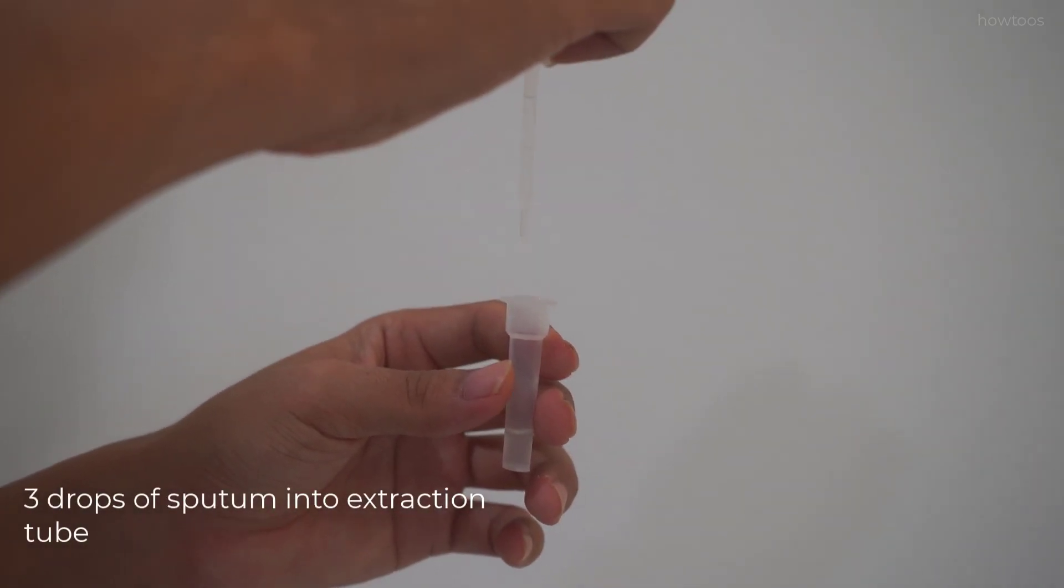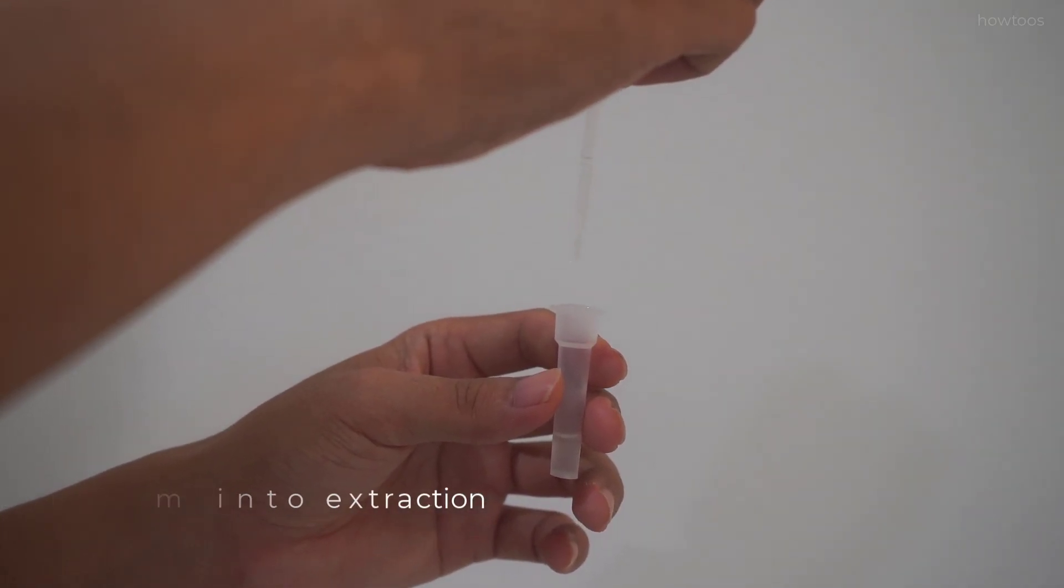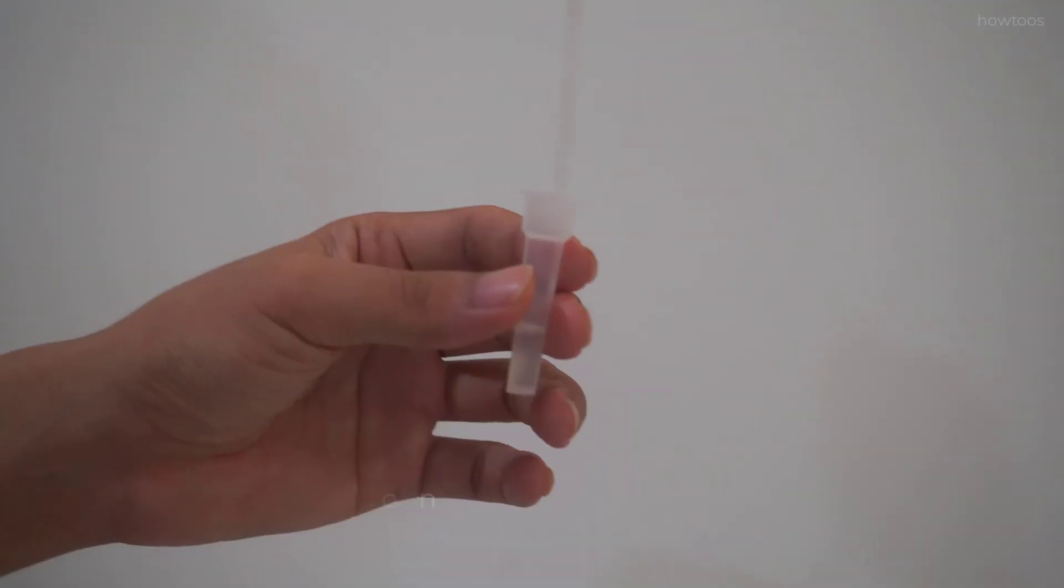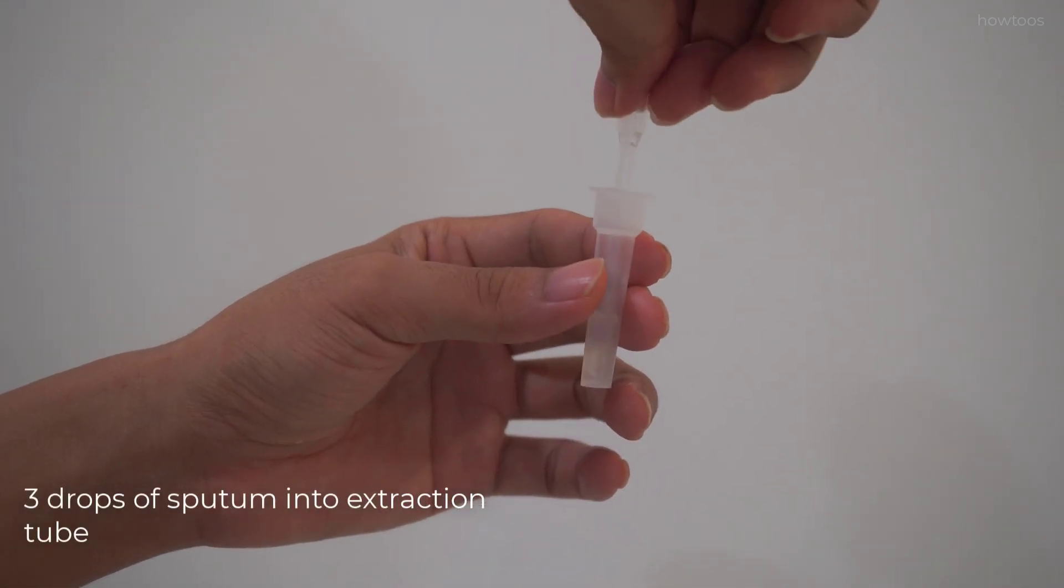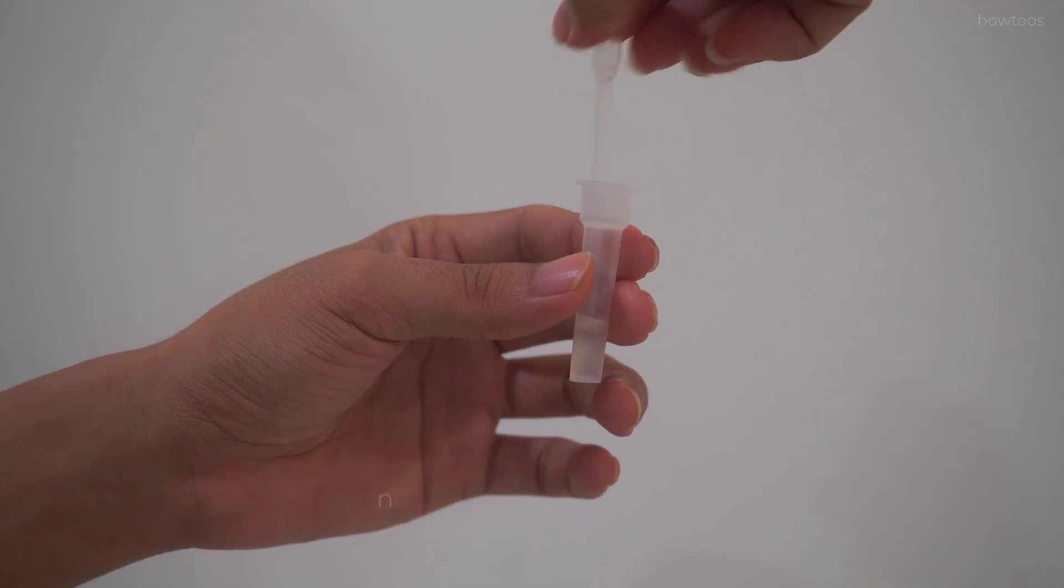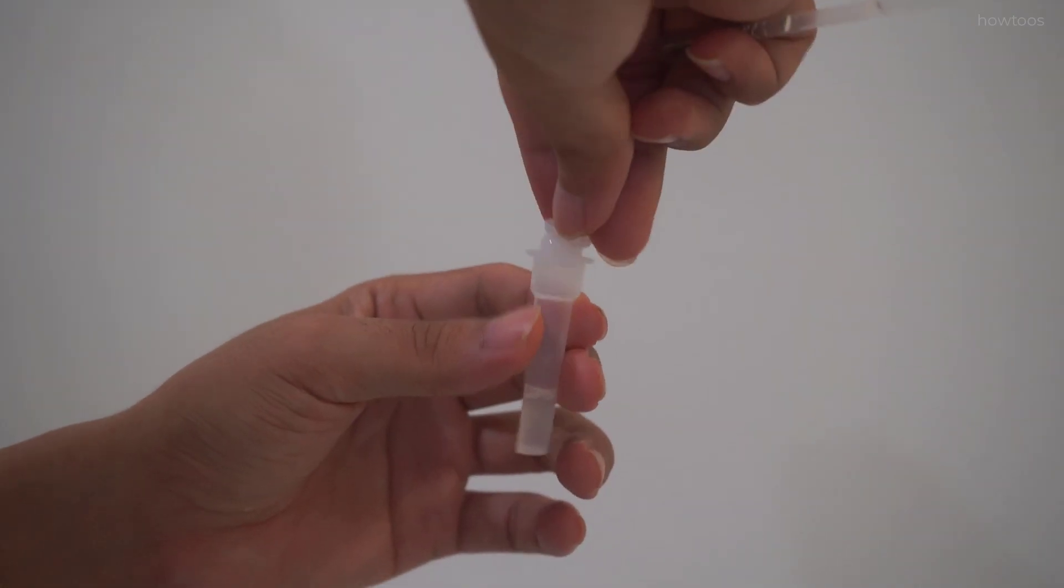Expel the excessive sample back into the paper container. Squeeze the dropper five times to mix the sputum sample with reagent. Close the tube with the provided cover and leave the sample for one minute.